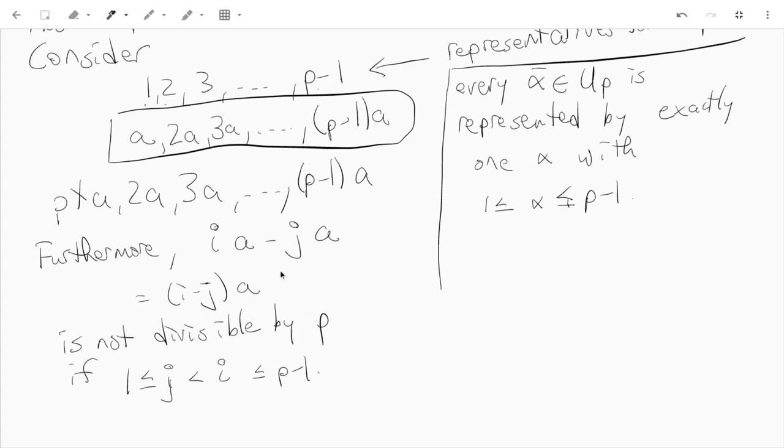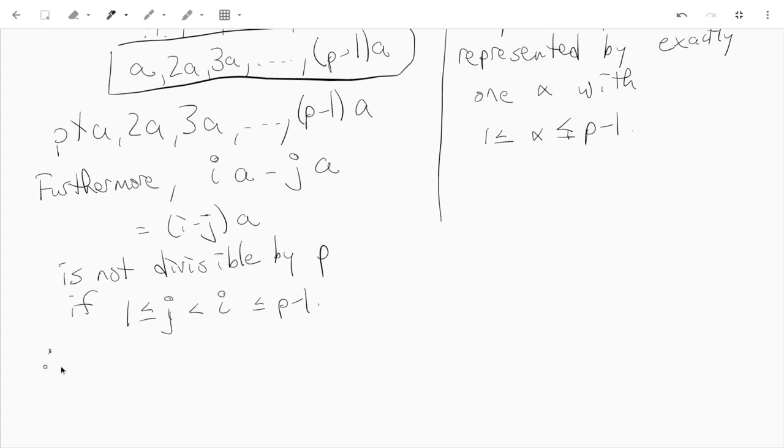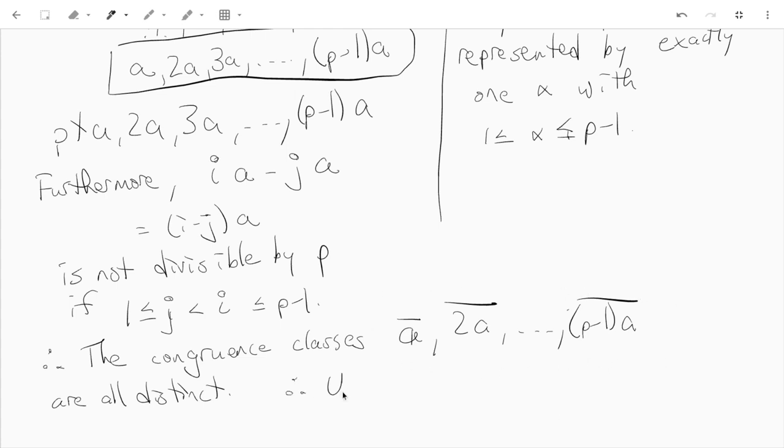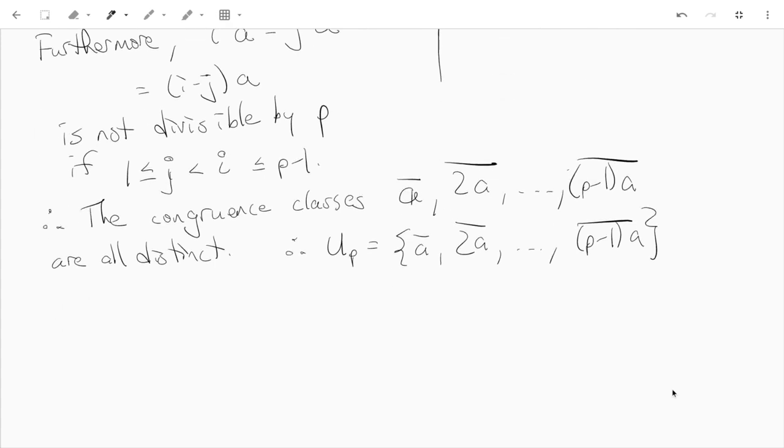So (i-j)a is not divisible by p. In other words, these differences are not congruent. So what this tells us is that the congruence classes a, 2a, up to (p-1)a are all distinct. But there's only this many congruence classes in Uₚ. So therefore, Uₚ is this as well. We can write it like this. And we saw before another way to write Uₚ is like this. And now we have two different ways of describing a set.